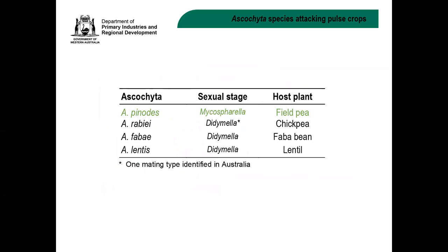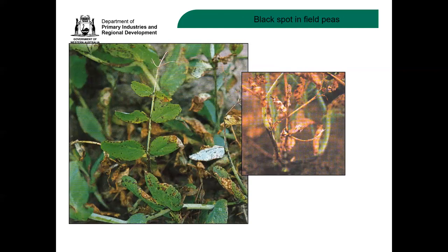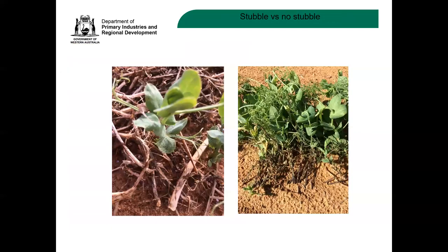Looking at ascochyta in field peas, it's called black spot. There is a diagram showing black spotting on leaves and lesions that coalesce and get larger as they come together. This disease also affects the stems and down onto the crown area of the field peas. Planting into a wheat crop rather than a previous pea crop will reduce the amount of black spot coming up from the soil.